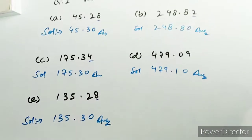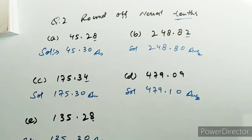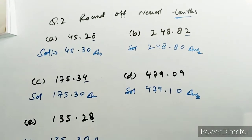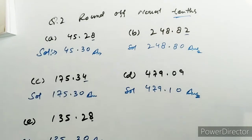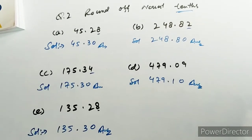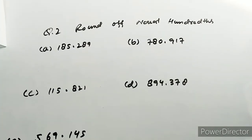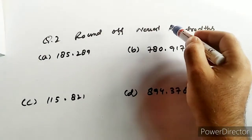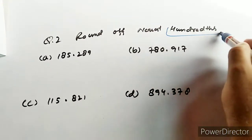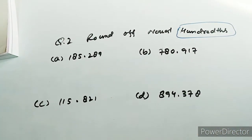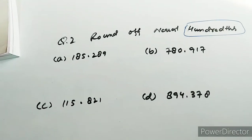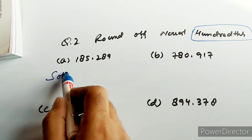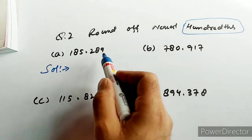तो यह रहेगा आपका complete solution question number 2 का। समझ आई? चलो अब आपको क्या करना है — अब आपको करना है 100th place वाली को, मतलब decimal के आगे जो third place होगी। तो देखो इसका solution जब हम करेंगे।